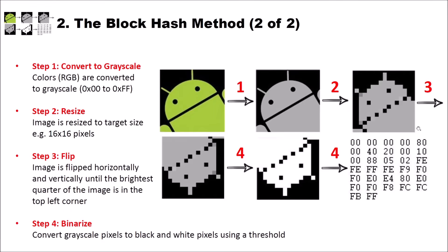With our Android image, the brightest corner is here, so it is flipped twice so that this bright spot is now in the top left corner. The basic idea behind this is that even when you rotate an image, the block hash should give you the same hash value.